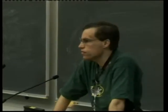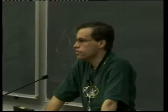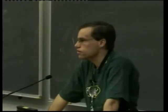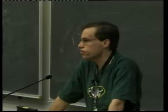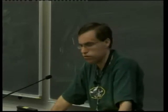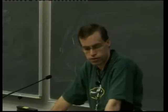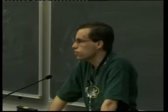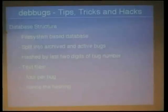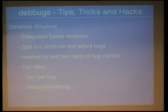The hashing of the bugs is just by the last two digits, so the directory structure is something like bugs.debian.org/db-h/00/301500.log. There are four files: log, status, summary, report — and they're all text files, so they're rsync-able, readable and editable in vi. They're relatively understandable. Who here has looked at the log file format? Congratulations for still living.